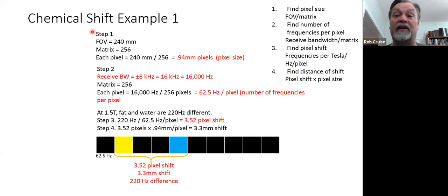Step one for this example, we have a field of view of 240 millimeters. If we have a phase encoding direction of 256 phase encoding directions in our matrix, we now have what we need to know for our first step. 240 field of view divided by our matrix 256 equals 0.94 millimeters. Our pixel is that wide in the phase encoding direction. That's our resolution.